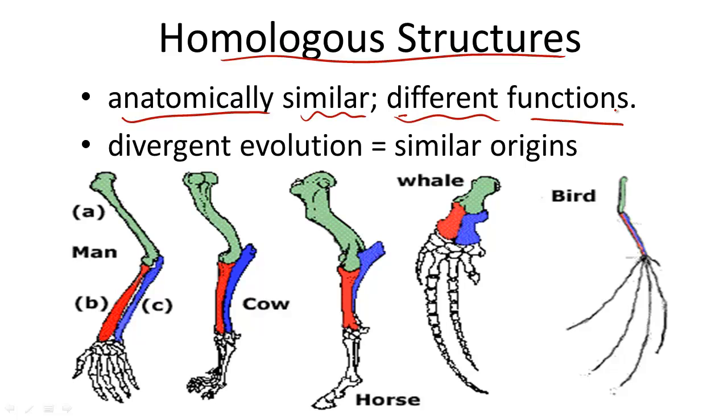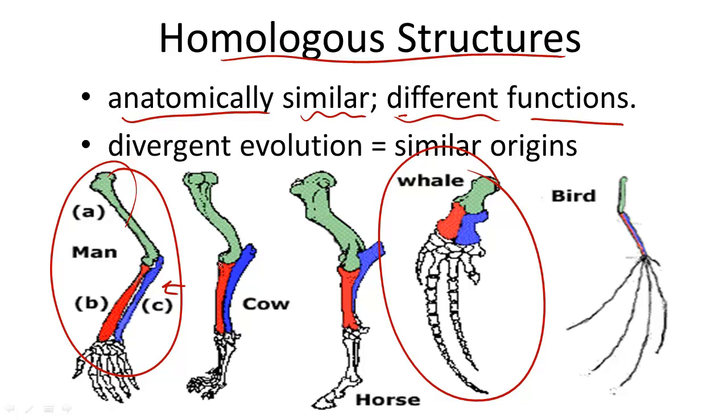Let's take an example of a whale and a human. Both have bones of the forearm in a similar position. But these bones have two very different functions.